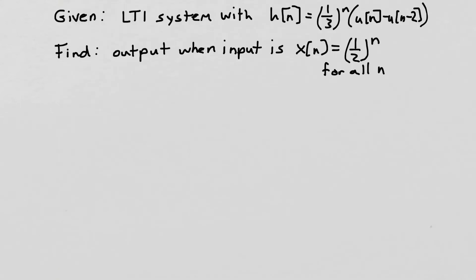Let's consider this example problem. In this problem we're given that we have an LTI system that has this impulse response. So h of n looks like this, and our goal is to find the output when the input is x of n equal a half to the n for all n. So this is the specific example that we're considering.